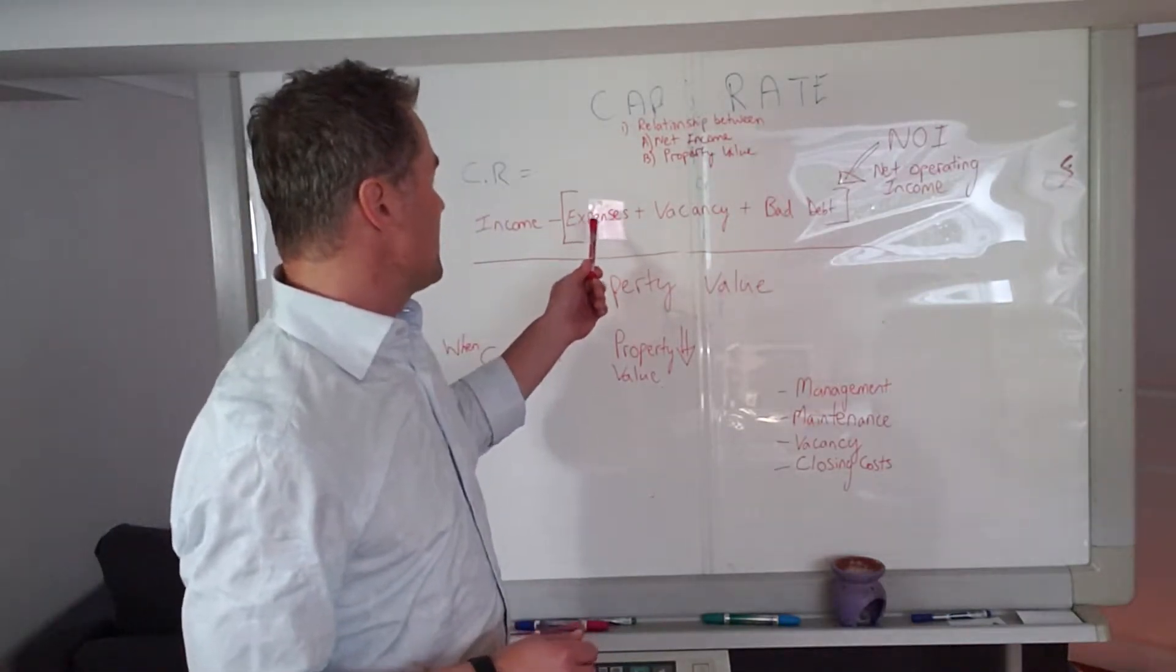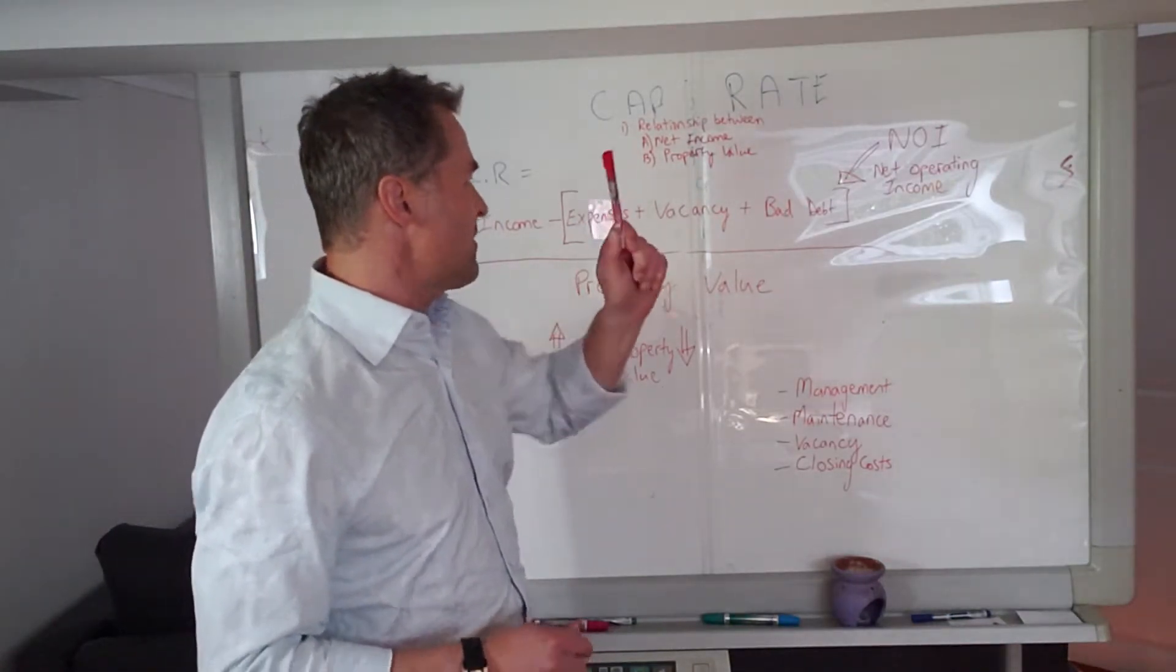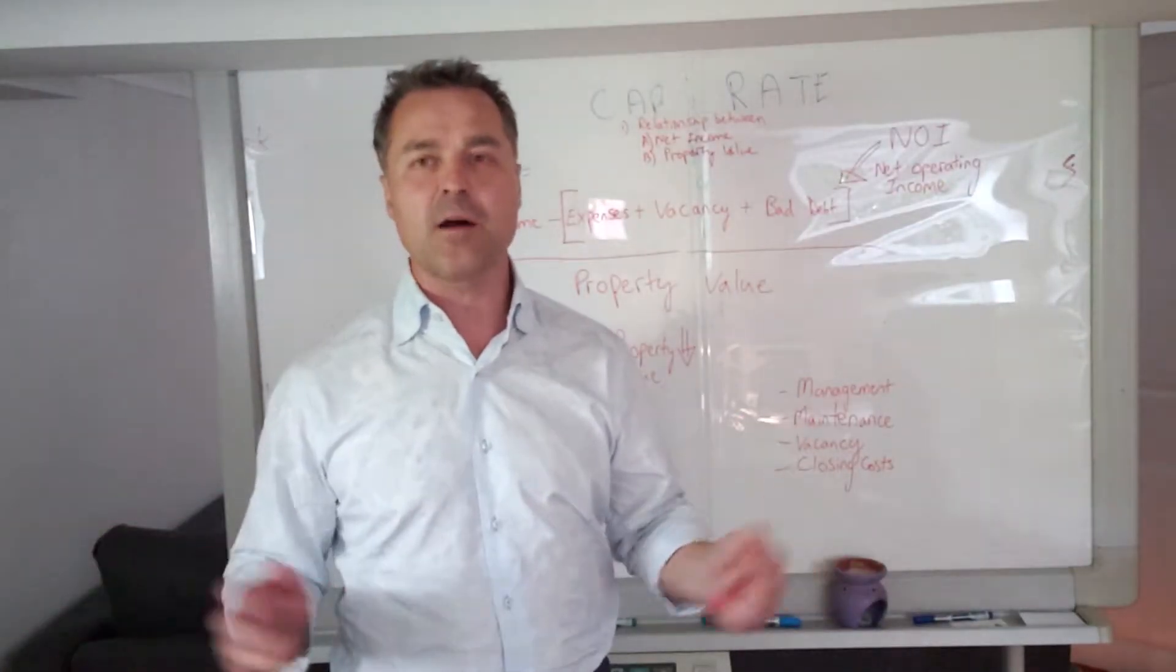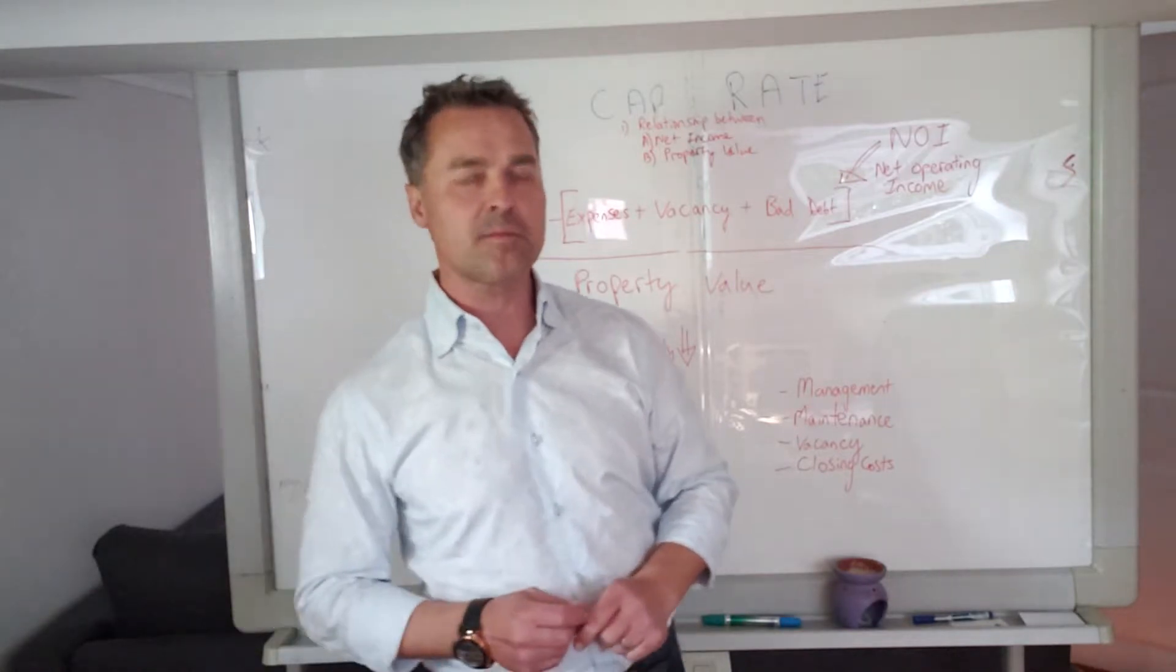So it's important to note that income minus the expenses, vacancy, and bad debt gives you the net operating income. That's your NOI—that's another term that's used.